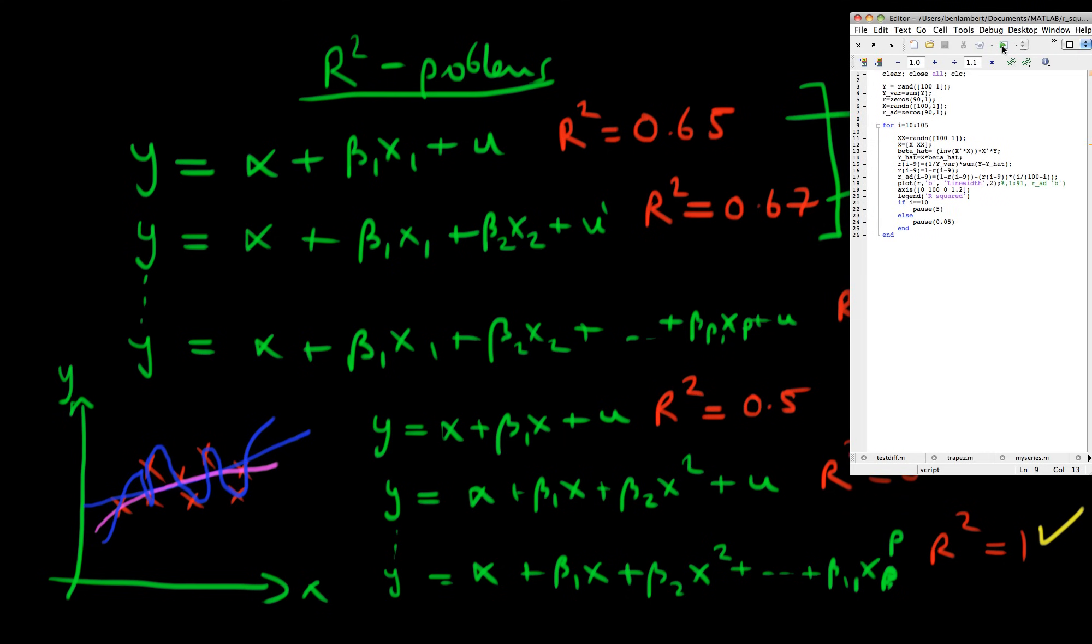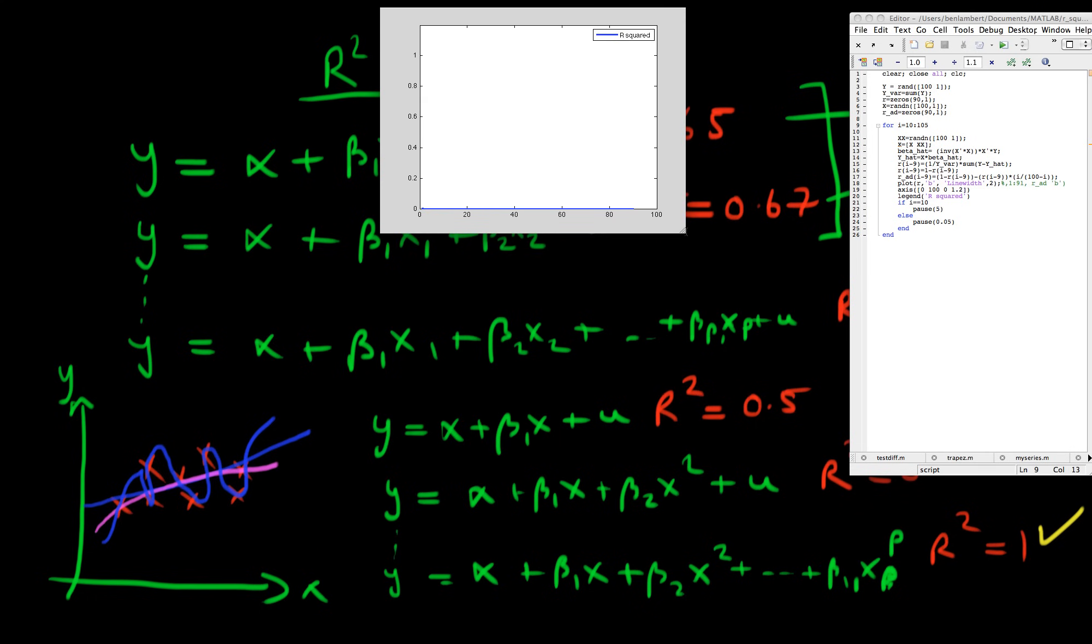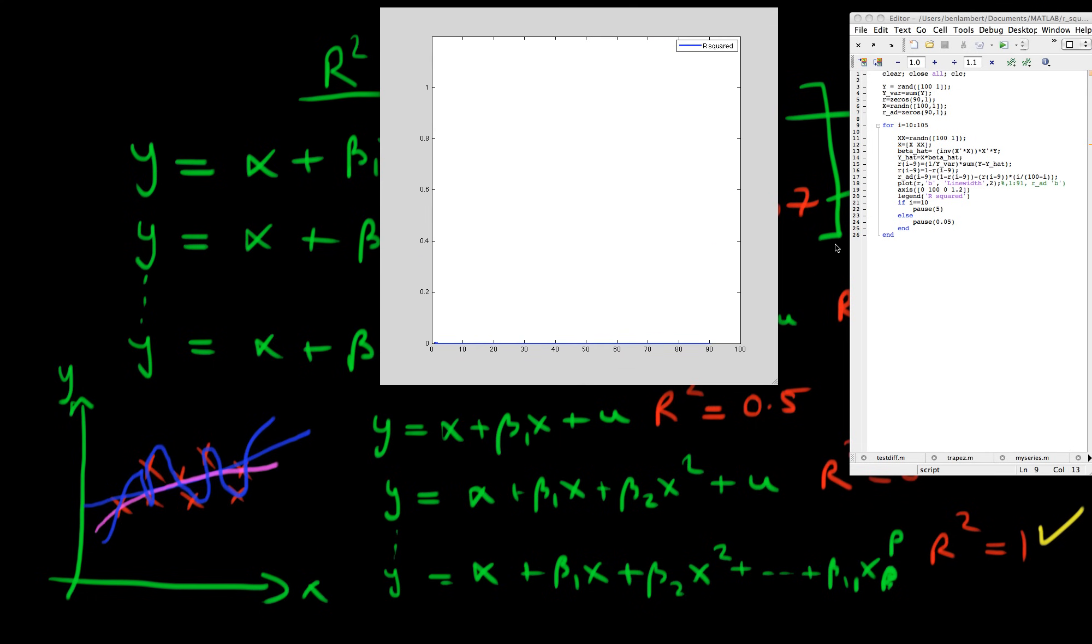And I've made a model of this in MATLAB whereby I'm trying to explain a 100 data point Y in terms of some random X variables which I add to the regression. So I start out with only one of these random X variables included in the regression. And I'm going to be looking at how R squared varies as I add more of this random noise to the regression.